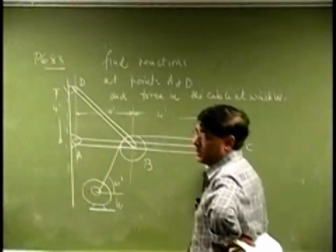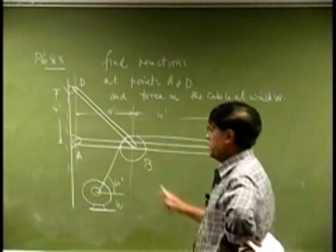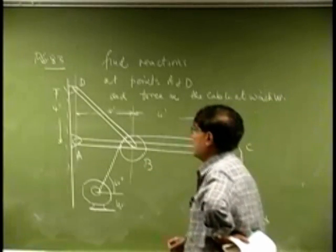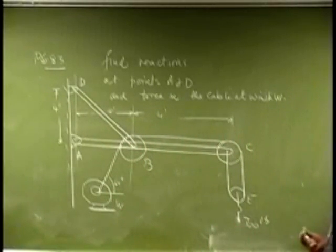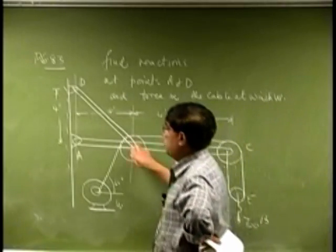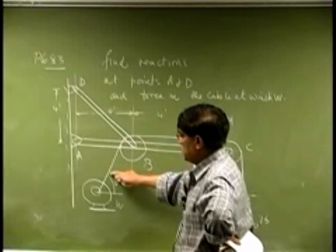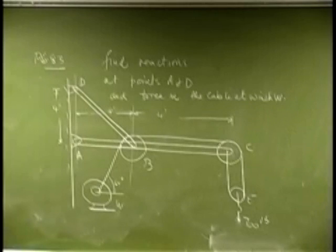Going from point A to C, it has two pulleys, one attached at point B, one attached at point C, and then you have a rod which goes from B to D. What you really need is to find reactions at this point as well as this point, and you want to find the force in the cable which attaches to the winch at W.